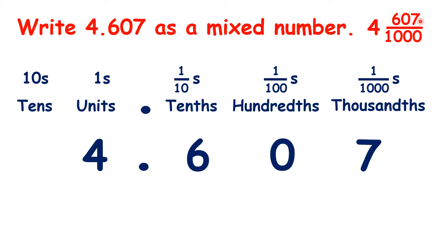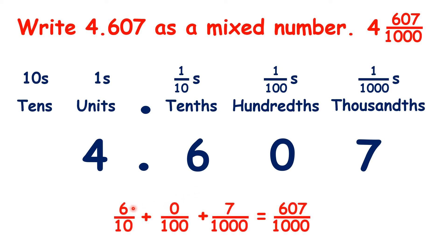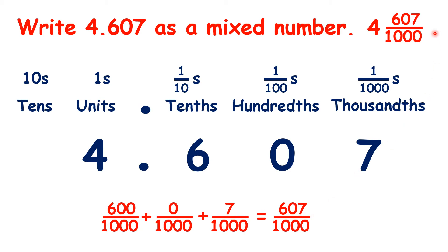Why is 607 thousandths the fraction of our mixed number? We have 6 tenths, no hundredths, and 7 thousandths in our decimal number. With 6 tenths, we can multiply the numerator and denominator by 100 to get an equivalent fraction of 600 thousandths. And then 0 hundredths is, of course, equivalent to 0 thousandths. So, that gives us 607 thousandths.